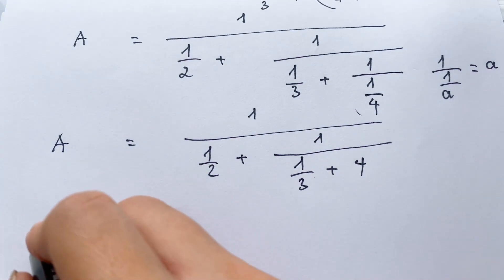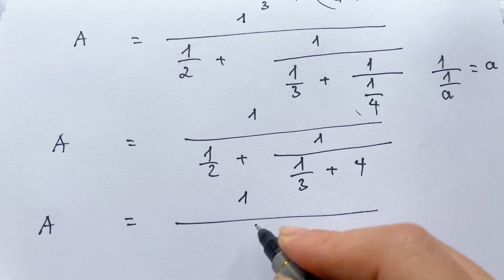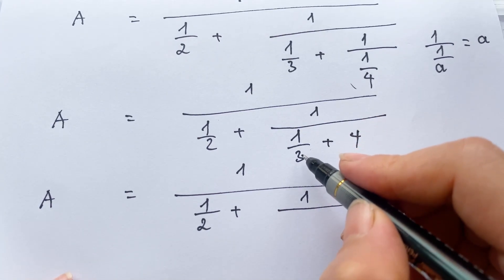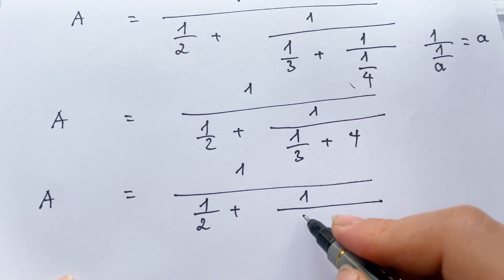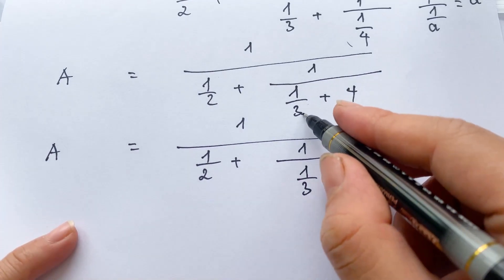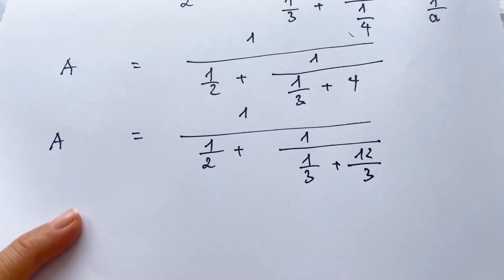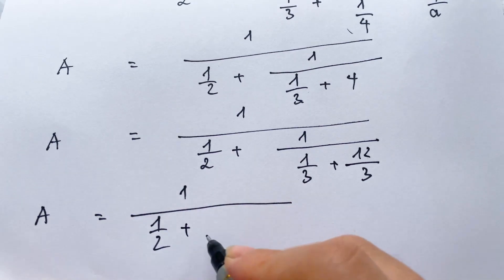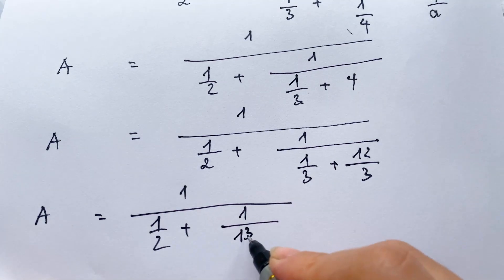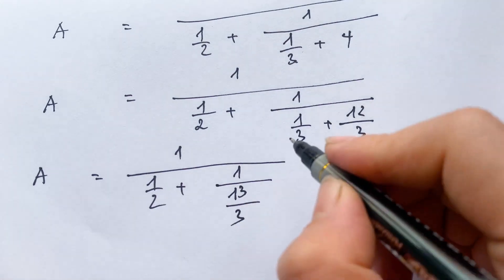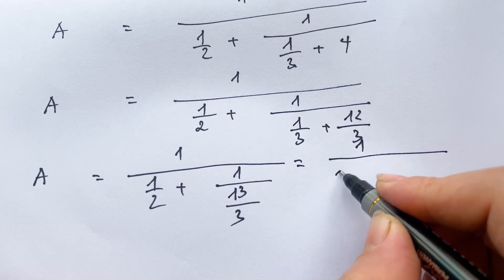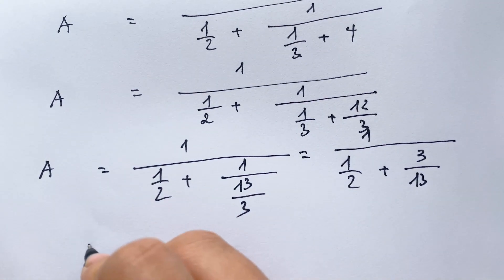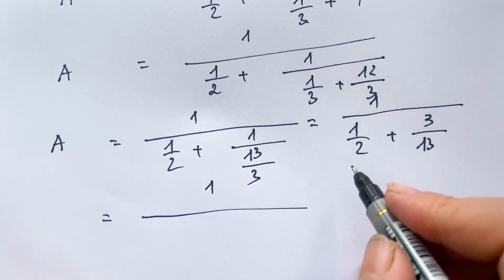We can say a equals one over one-half plus one over — we need to find the same denominator here. So a equals one over one-half plus three over thirteen, which equals one over one-half plus three over thirteen.